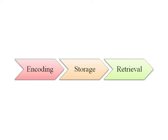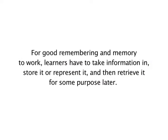According to this approach, children develop a gradually increasing capacity for processing information, which allows them to acquire increasingly complex knowledge and skills. The processing of information in memory is shown through a figure. For good remembering and memory to work, learners have to take information in, store it or represent it, and then retrieve it for some purpose later. Memory's information processing has been described in the following points.